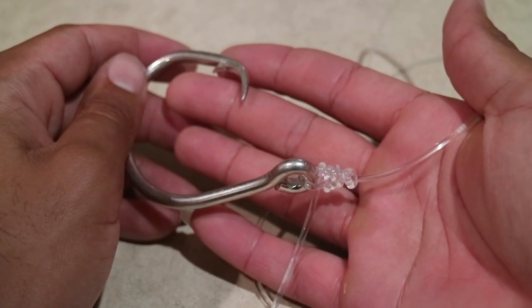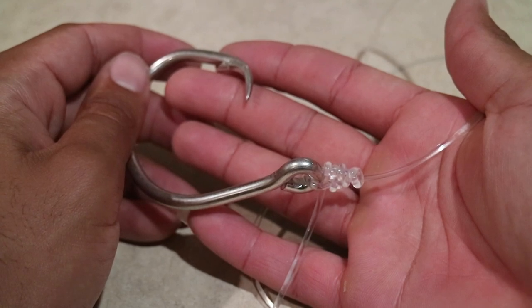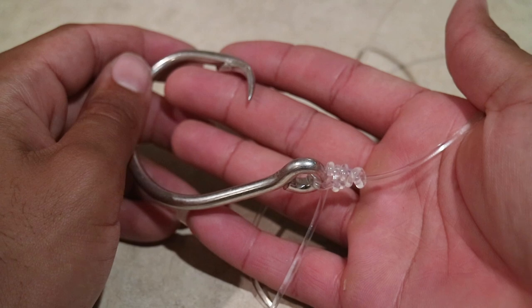That's how you tie a 500 pound mono to a hook. It is a little tricky. But if I was you, I'll use gloves to get more grip on the mono when you're making the knot.